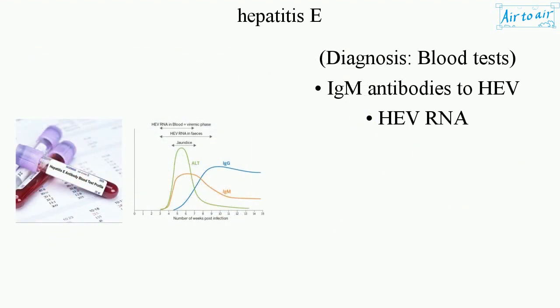Diagnosis involves blood tests, including IgM antibodies to HEV and HEV RNA.